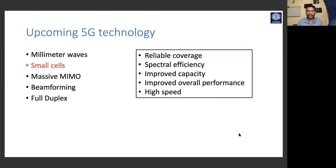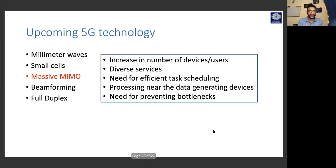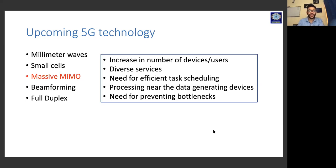Massive MIMO — massive input, massive output — addresses the increasing number of devices and diverse service requirements. There is a need for efficient task scheduling to prevent bottlenecks. An advantage is processing near data-generating devices. These points are again analogous to fog computing — the main motive behind explaining 5G is that the fog computing paradigm is appropriate and best suited for helping deploy 5G networks.